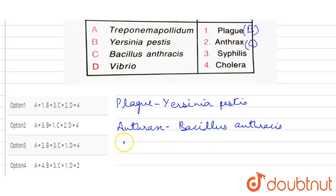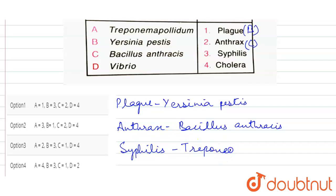Next is syphilis. Syphilis is a sexually transmitted infection which is caused by the bacteria Treponema pallidum. So the correct option is 3.